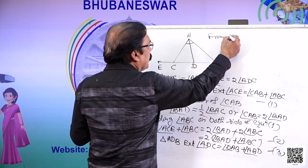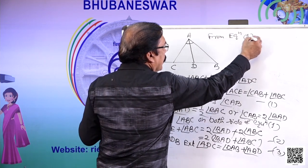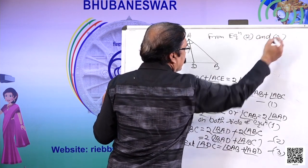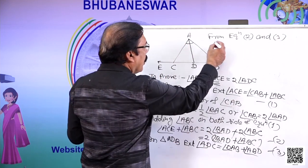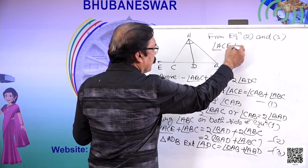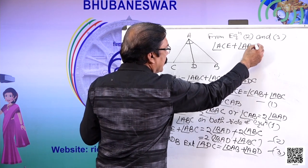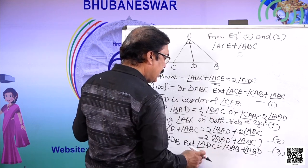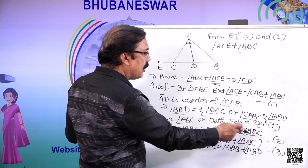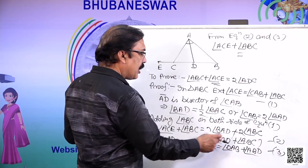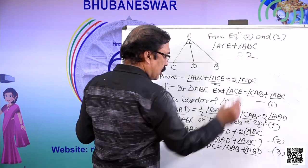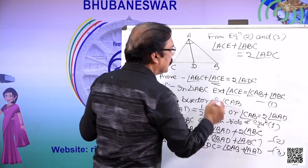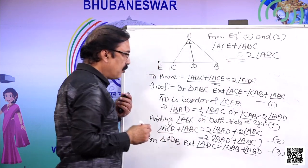From equations 1, 2, and 3, what do we get? We get angle ACE plus angle ABC is equal to DAB plus ABD, and here it is twice of (DAB plus ABC). We can write 2 times (BAD plus ABC), which equals ADC. So we can write 2·ADC. This was to prove, and we proved it.